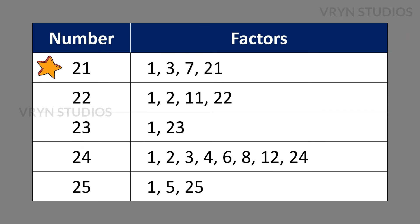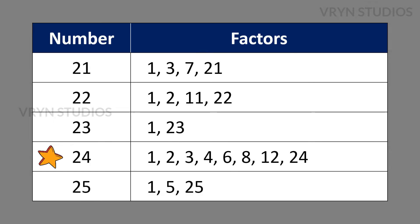The factors for the number 21 is 1, 3, 7 and 21. The factors for the number 22 is 1, 2, 11 and 22. The factors for the number 23 is 1 and 23. The factors for the number 24 is 1, 2, 3, 4, 6, 8, 12 and 24. The factors for the number 25 is 1, 5 and 25.